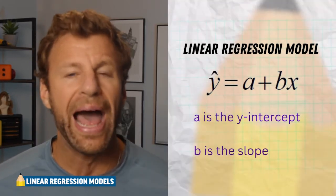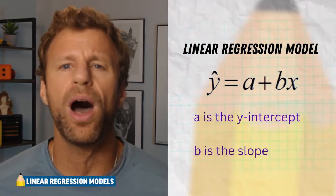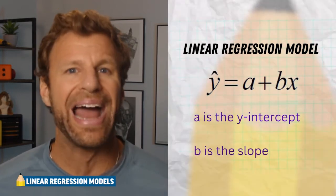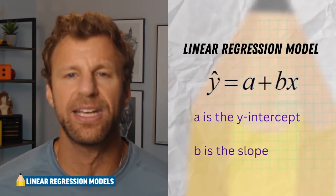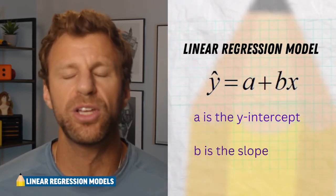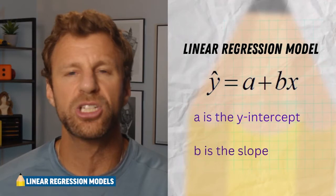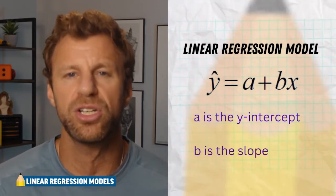Now, why do we have that little hat? And yeah, it is called a hat on that y. That is to denote that it's not an actual y value, it's merely a predicted y value. This is exactly what linear regression models do. They take explanatory values and they make a prediction for the response.